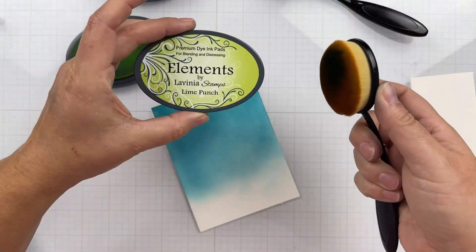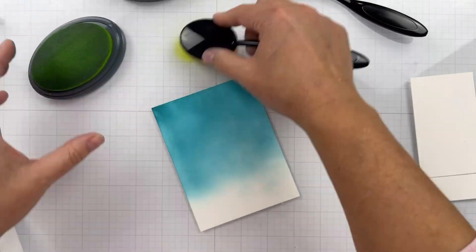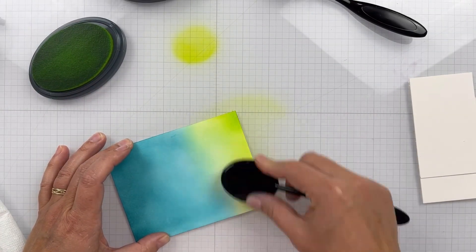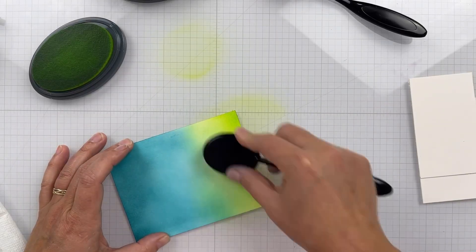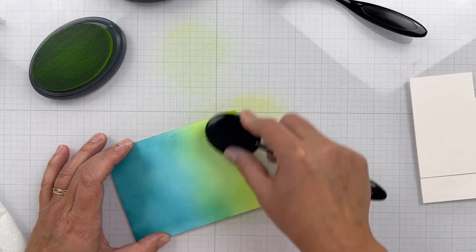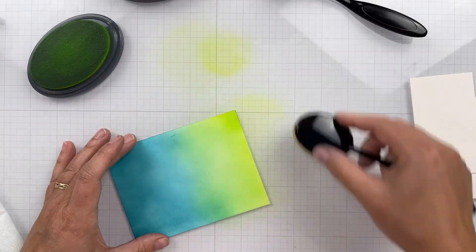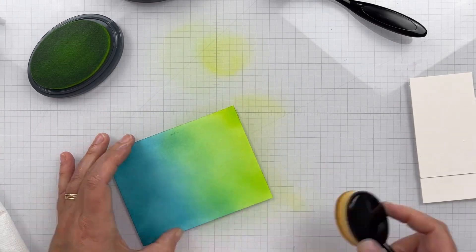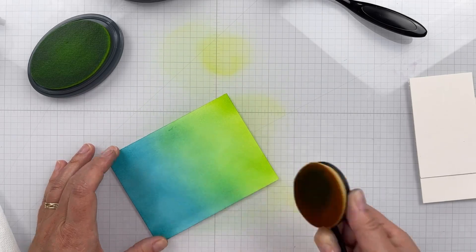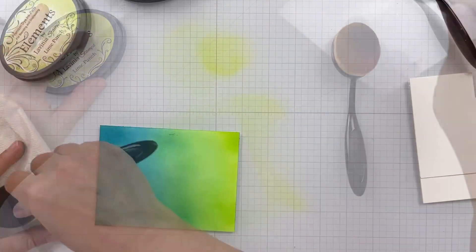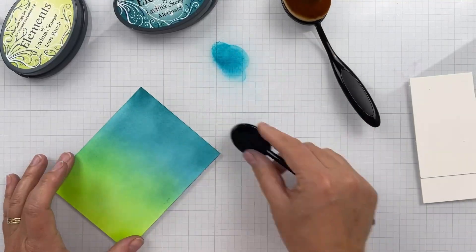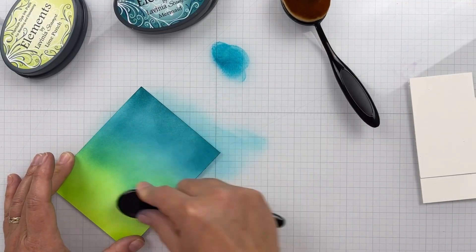Lime Punch is a really vibrant yellowy-green color. I love it. Now if you don't have Elements ink pads, you can use Twisted Citron, Peacock Feathers, and Chipped Sapphire in Distress Ink. I'm not sure you're going to get the same effect with the Oxides because that's more of a chalk color, so definitely go with just regular Distress Inks.